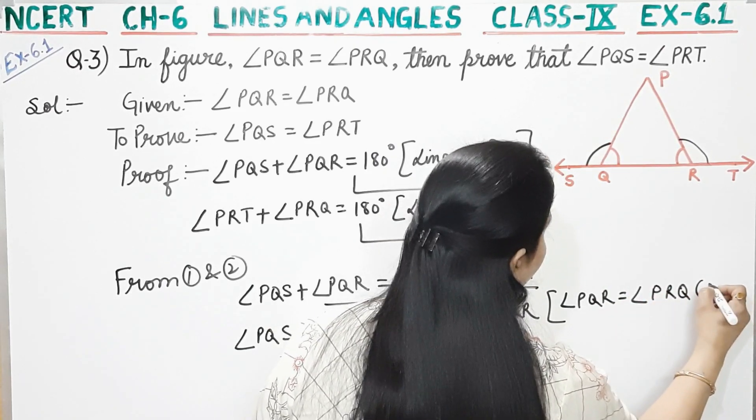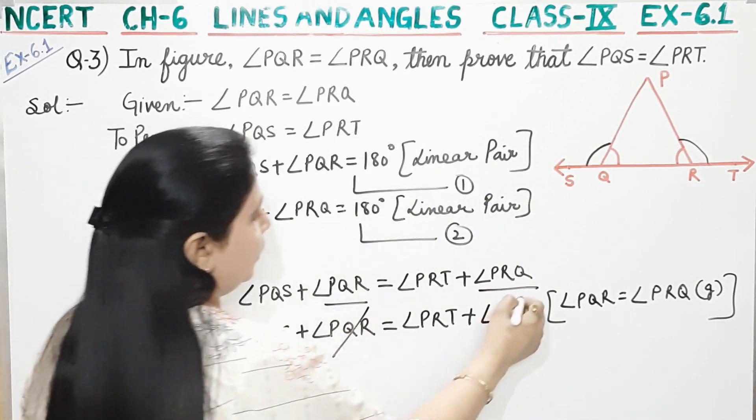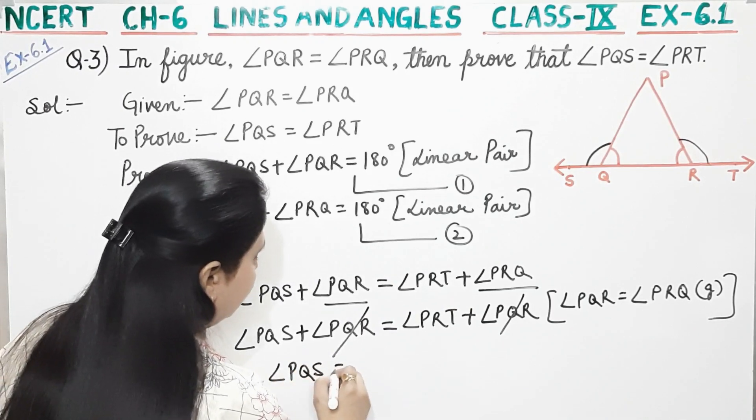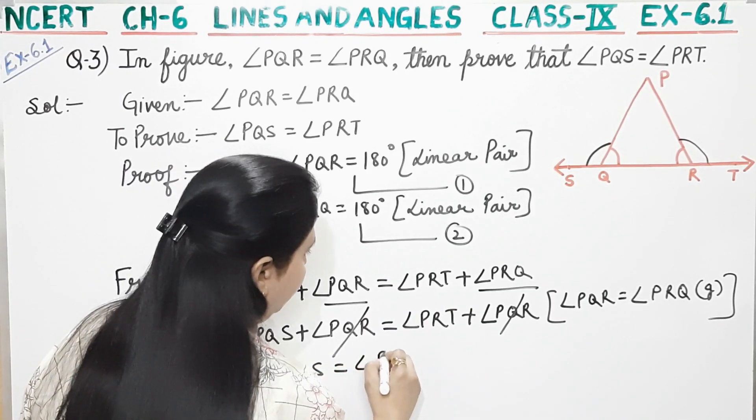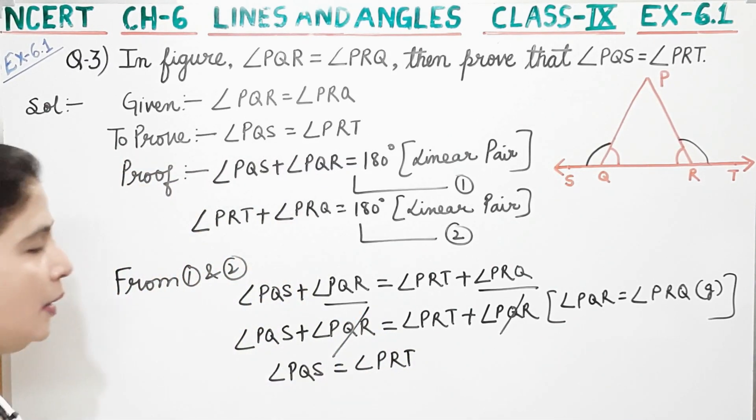And here, we have given. Okay? Now, PQR and PQR cancel. Now, what remains with us? PQS is equal to angle PRT. This is what we had to prove. PQS is equal to angle PRT.